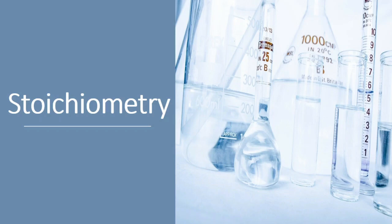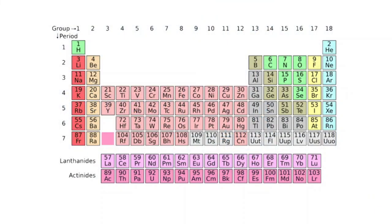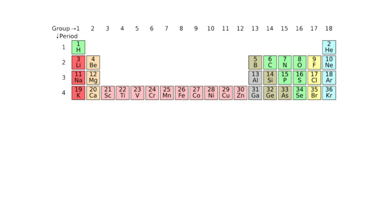Before we start looking at stoichiometry, I do have to tell you a bit about the periodic table, because you need it to actually do these problems. Here's the catch — you don't have a periodic table in the exam, so you need to memorize some of it. You definitely don't need to memorize the whole thing, but you do need to memorize these first four periods, all these elements and their atomic numbers. If you don't do that, unfortunately you won't be able to do any stoichiometry.